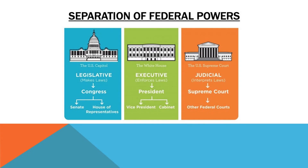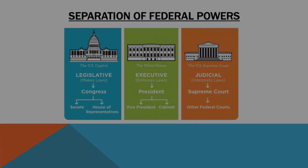Other systems of democratic governance include unitary systems, by which voters elect members to the central or federal government, but then it is the federal government who gives power to the smaller or local governments. And confederations — the type of government that we had in the U.S. prior to the Constitution — are kind of the opposite of a unitary system. In that system, voters give power to the states, and then those more powerful states give however much power they decide to the weaker central government. So federalism is unique because voters simultaneously give power to both the state and the central government. Not only is government divided between the states and the federal government, but power is also separated between three separate institutions: the legislative branch, the executive branch, and the judicial branch. This is referred to as the separation of powers.